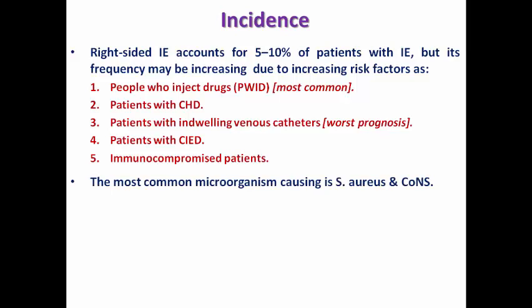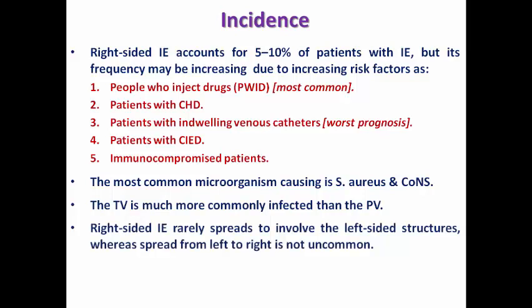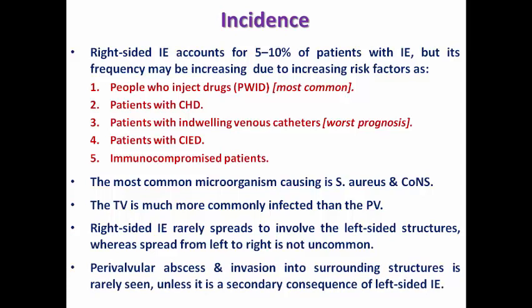The most common causative microorganisms are Staph aureus and coagulase-negative Staph. The tricuspid valve is much more commonly affected than the pulmonary valve, and spread from right to left is rare. However, spread from left to right is not uncommon — so when both sides are affected, suspect it started on the left. Perivalvular abscess or invasion into surrounding structures is rarely seen in right-sided endocarditis, unlike left-sided, due to lower risk of perivalvular invasion — so dehiscence or pseudoaneurysm is uncommon here.